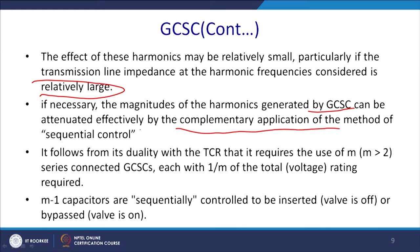The effect of these harmonics may be relatively small except for the third harmonic, particularly if the transmission line impedance at harmonic frequencies is considered to be relatively large. If necessary, the magnitude of harmonics generated by GCSC can be attenuated effectively by the complementary application method of sequential control. Recall that the fifth and seventh harmonics are positive and negative sequence.